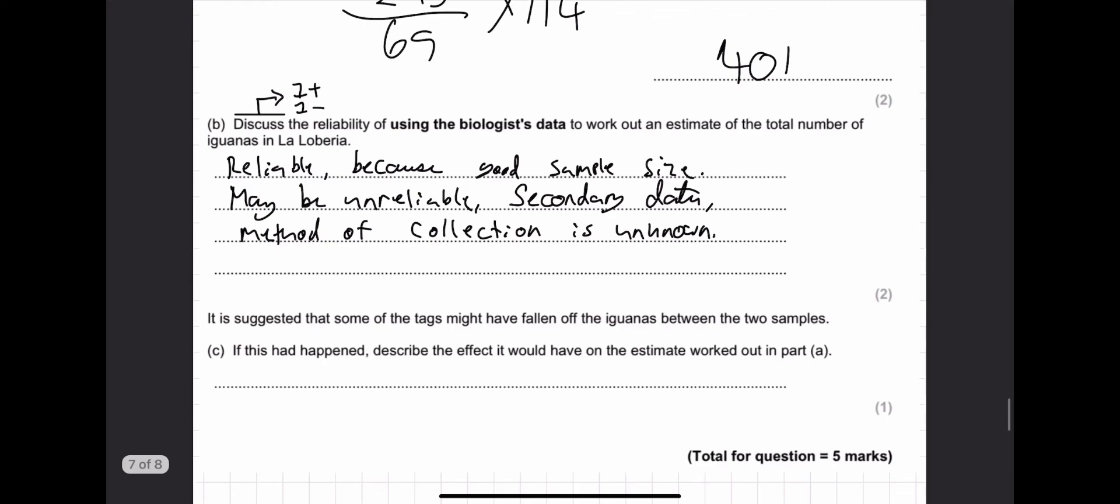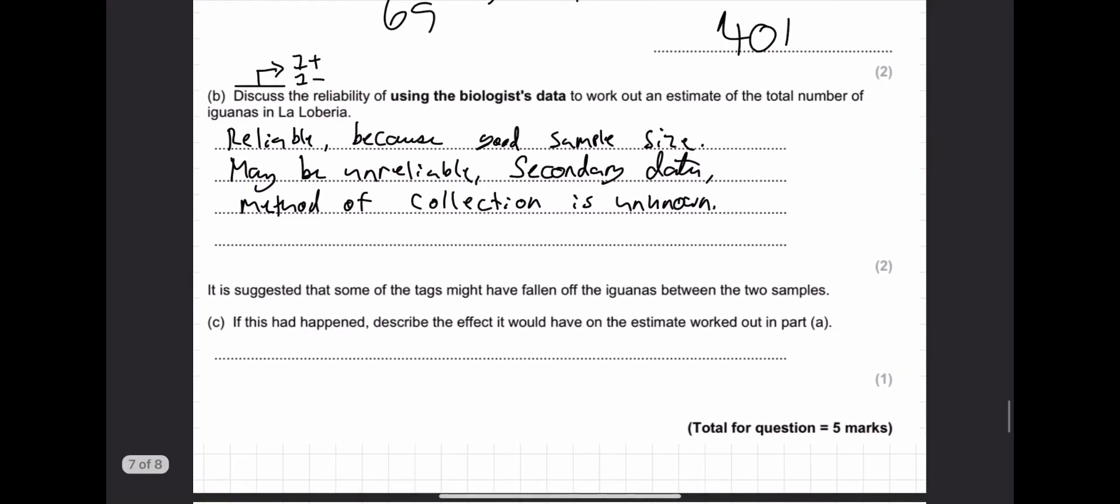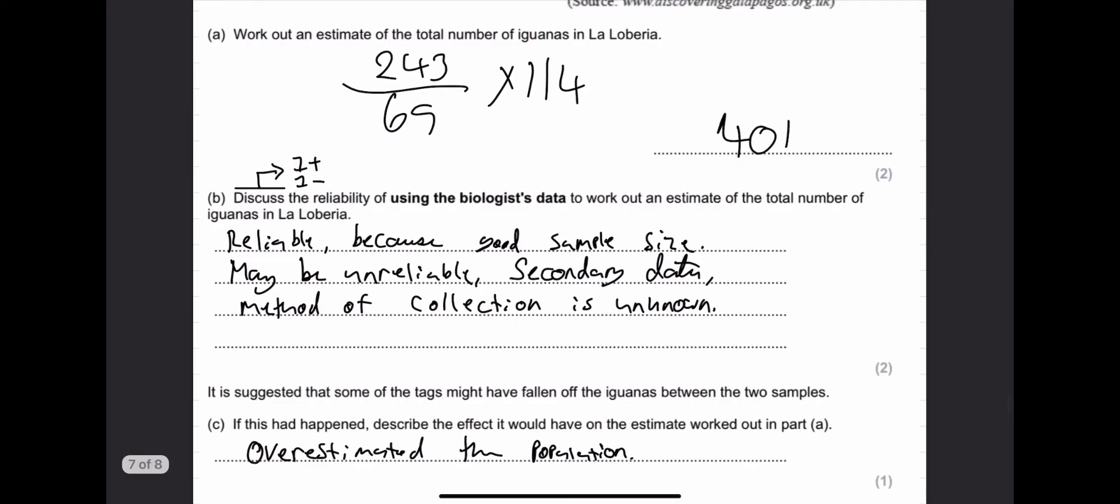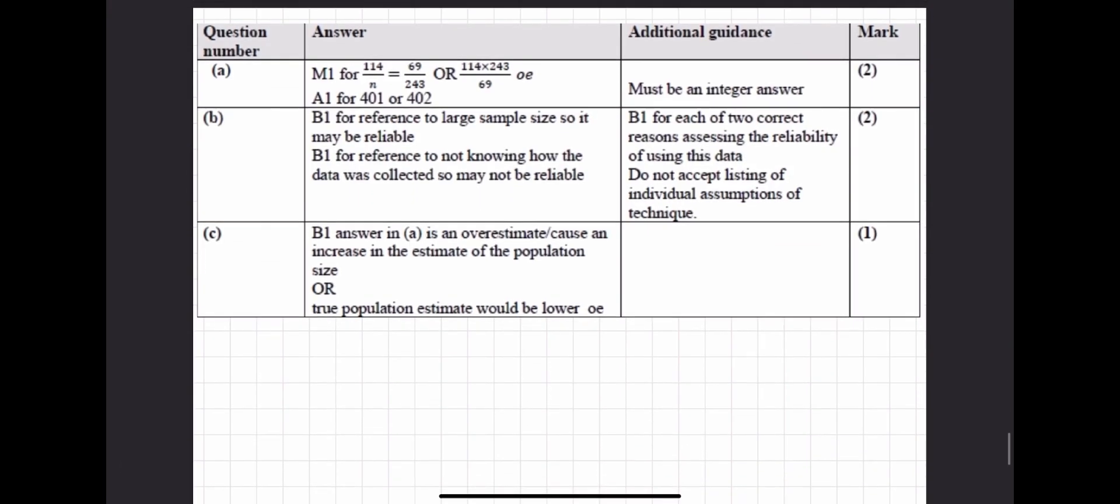And it is suggested that some of the tags might have fallen off the iguanas between the two samples. If this has happened, describe the effect it would have on the estimate worked out in part A. Or if tags have fallen off. Then we would have overestimated the population. And that's it. It's not too much more work in an exam question than a normal question. I'm going to put up the mark scheme now. If you're interested, this is where all the marks come from.